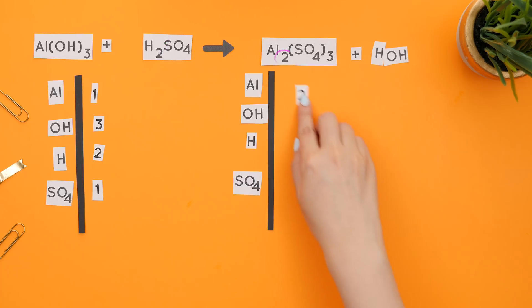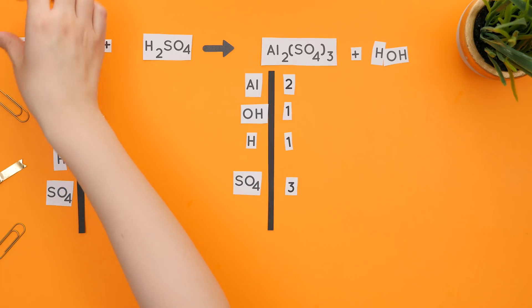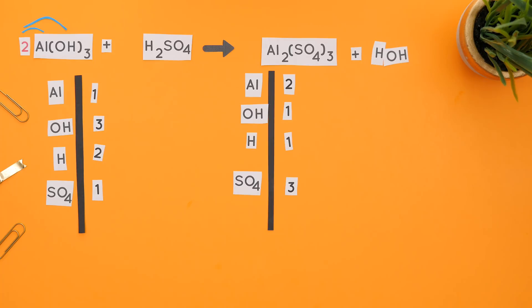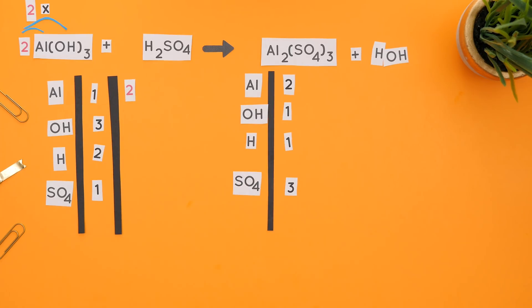On the product side, there are two aluminums, three SO4s since it's in parentheses, one H and one OH. To balance the aluminums, we need a two in front of aluminum hydroxide. Distribute the two to the aluminum and OH, and we now have two aluminums and two times three, so six OHs. And H and SO4 remain unchanged.